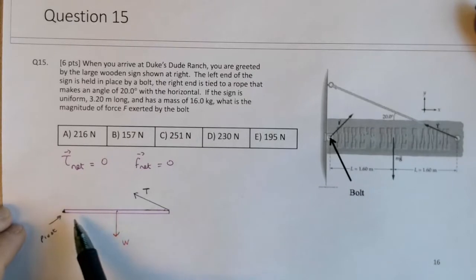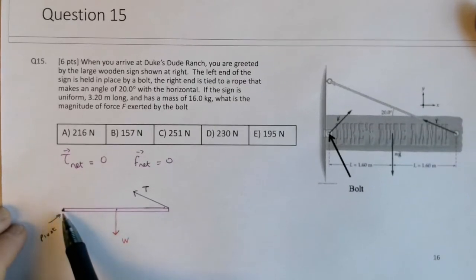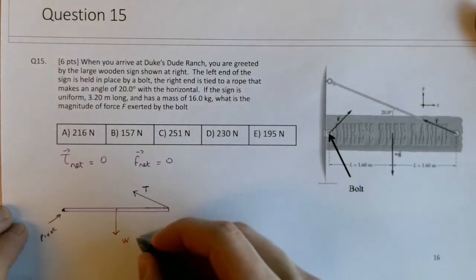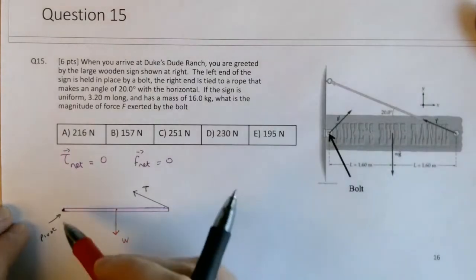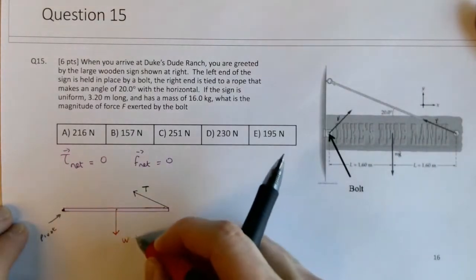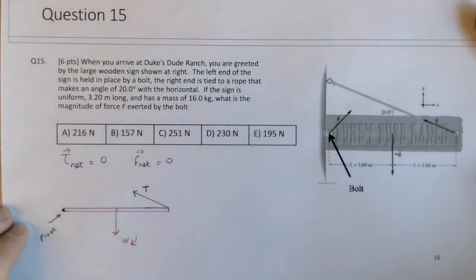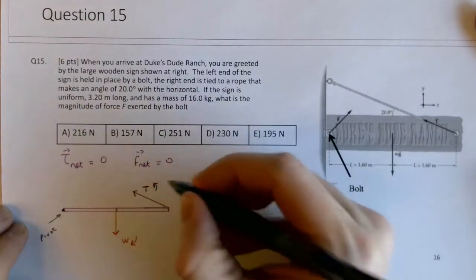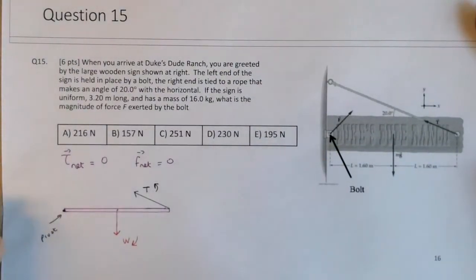And then we have a tension force here at 20 degrees to the horizontal. And then this is the bolt here. So there is a force of the bolt of course, but any torque exerted by that force is zero about this pivot point. So if I make this the pivot, I'm only going to worry about these two forces.